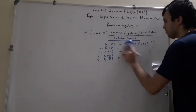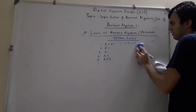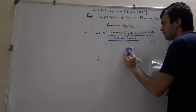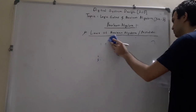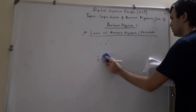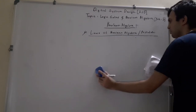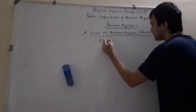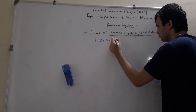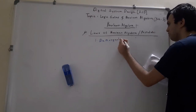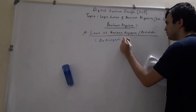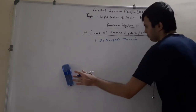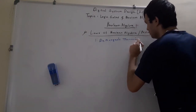Now we move on to the next law of Boolean Algebra — you can call it a law or a theorem. The name of this theorem is De Morgan's theorem, also called De Morgan's law in Boolean Algebra.